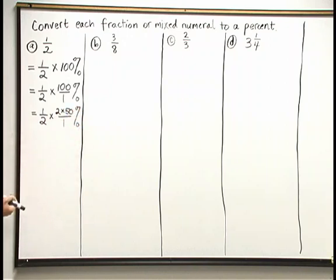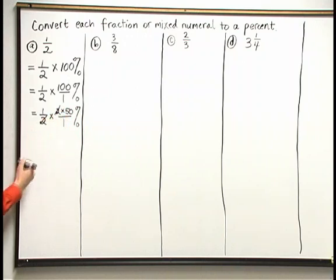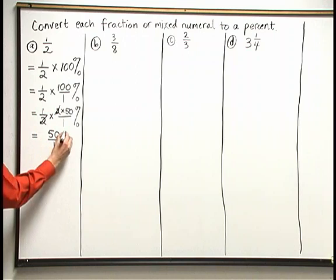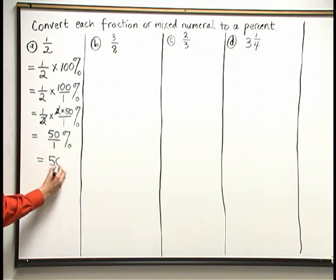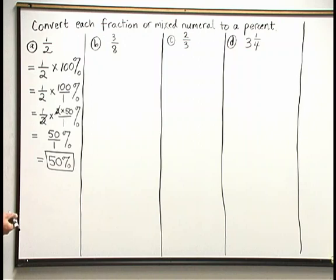I broke down 100 in this way because I can see that I'm going to be able to cancel a 2 above and below. I now have 1 times 50 is 50 over 1 percent. That's the same as just 50 percent. The fraction 1 half is equal to 50 percent.